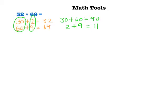Now I need to add together those totals. 90 plus 11. Now I know 11 is 10 plus 1. So I'm going to use my landmark numbers and go 90 plus 10 equals 100, and 100 plus 1 equals 101.